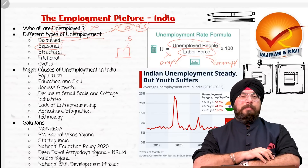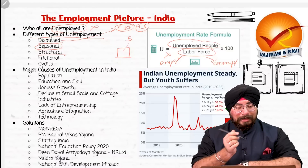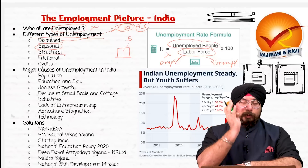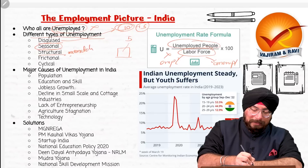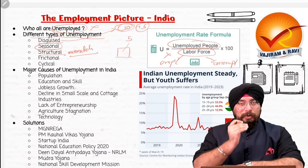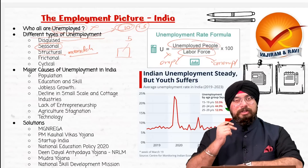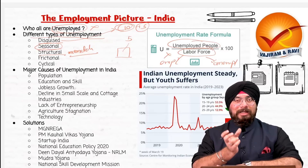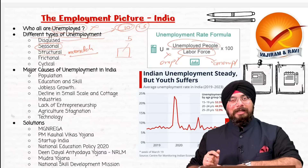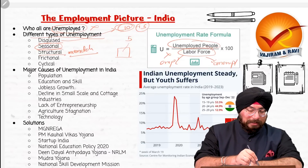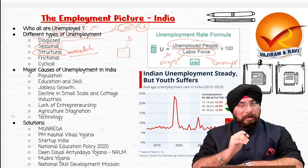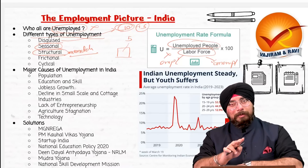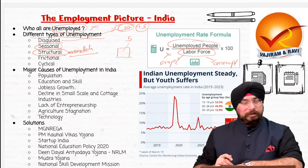Now structural unemployment is very, very important and also exists in our country. Whenever there is a mismatch between the skills required in a job versus the skills which a person is having, and the person remains unemployed because of that mismatch, that kind of unemployment is known as structural unemployment. Structurally there is a problem in our economy — a mismatch between skills required and skills present in our people.